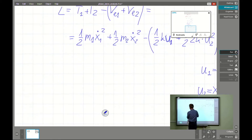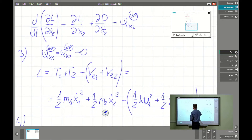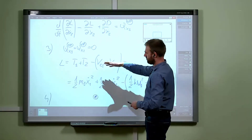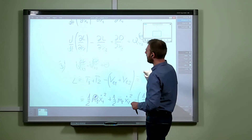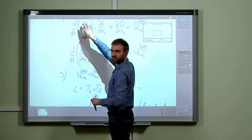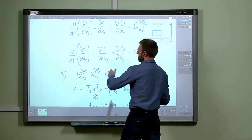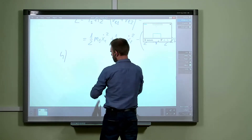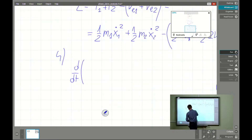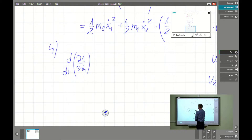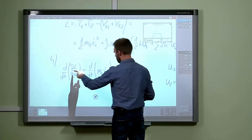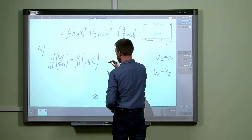In the next step we find the particular values of the energies. Since the Lagrangian form is quite explicit, we take the partial derivative with respect to ẋ1 and find the time derivative. Due to that differentiation we get m1 ẋ1 — the generalized momentum for the first coordinate.